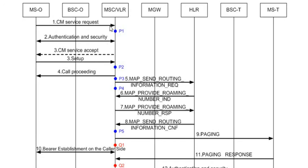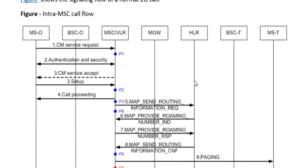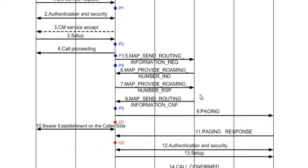The HLR sends a Provide Roaming Number request indication message to that VLR. Since in this case the calling party and called party both belong to the same MSC, this message is sent back to the same MSC. The MSC checks the MSRN being carried in the Provide Roaming Number message and returns a Provide Roaming Number response message to the HLR, containing the roaming number.